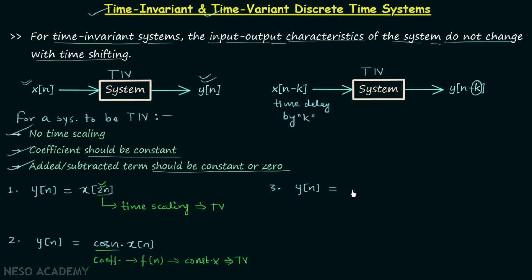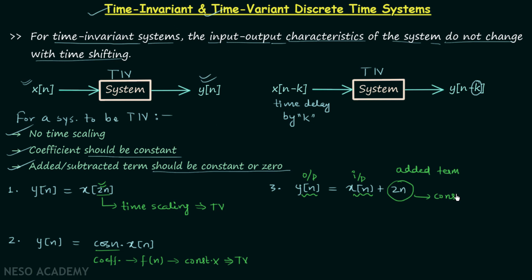In example three, output y[n] = x[n] + 2n. In the system relationship we can see there is an added term, which is 2n. According to the third condition, an added or subtracted term should be constant or zero. Here we have 2n, which is not constant because when n changes, 2n will also change. Therefore, the system is time variant.